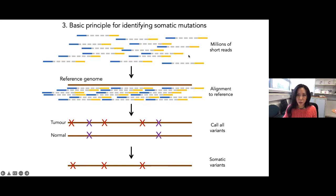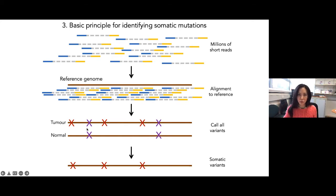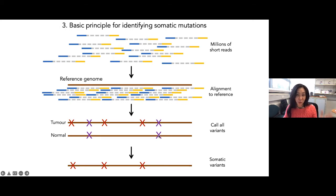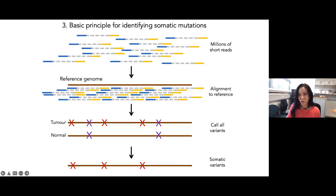You'll have reads from the tumor and from the normal, aligned back to the reference human genome. You then call all the differences between your tumor sample and your normal sample relative to that reference genome, and subtract all the germline variation. Germline variants are the purple crosses in the schematic; the red crosses represent somatic or acquired mutations. In somatic cancer genetics, we are interested in those acquired mutations.